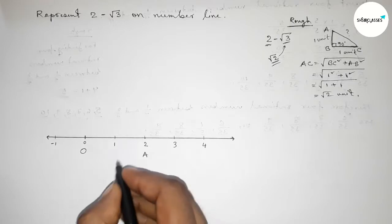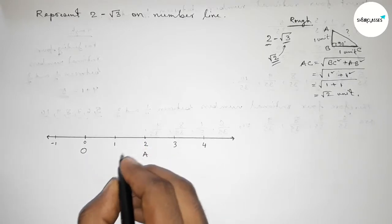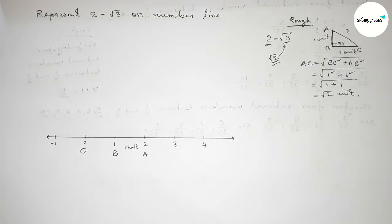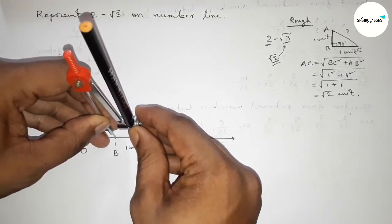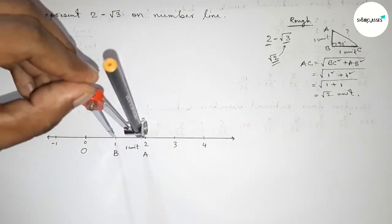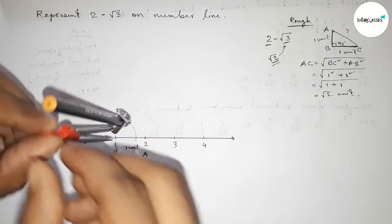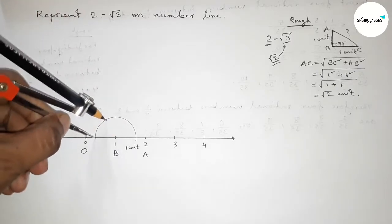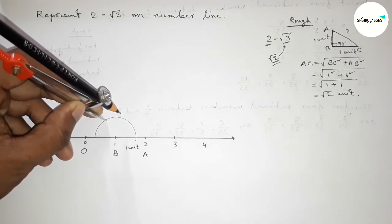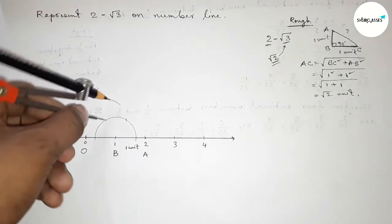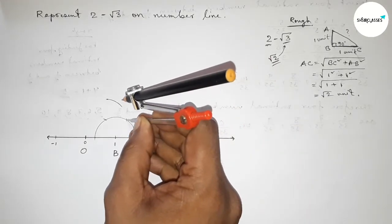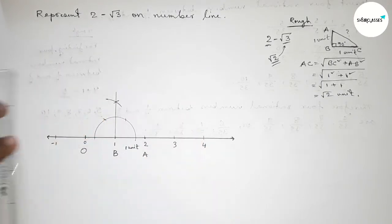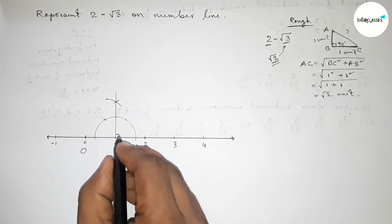Now applying this concept. Between 1 and 2, taking point B at 1, this is one unit length. We have to draw a 90 degree angle at point B using compass. Taking any length and drawing an arc, then putting the compass with the same length and cutting arcs here and here, then drawing another arc with the same length and cutting again.